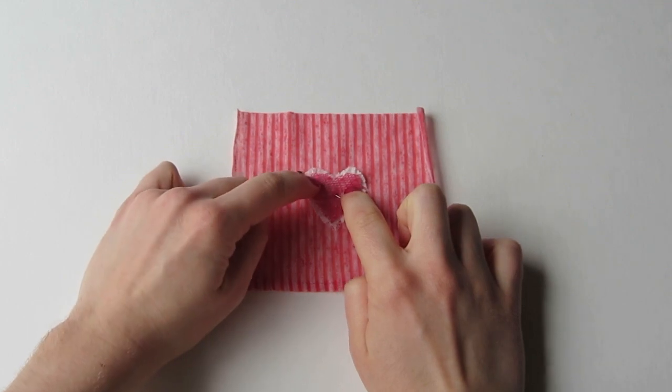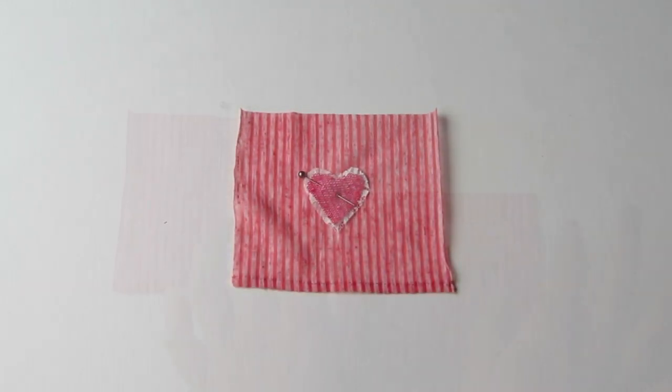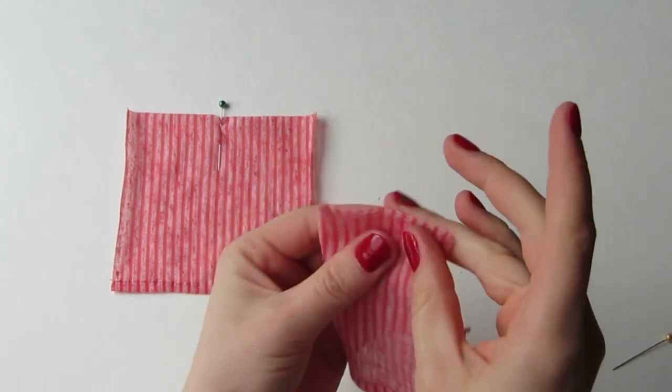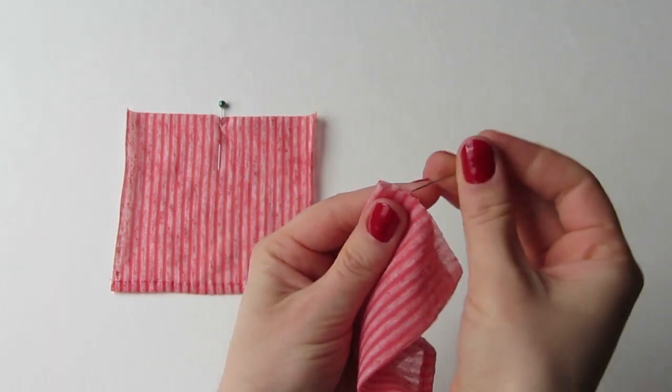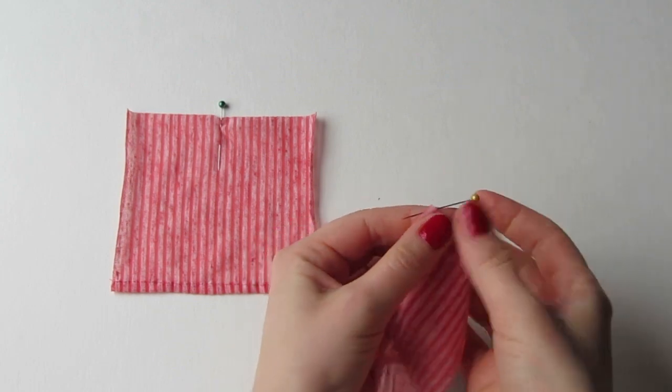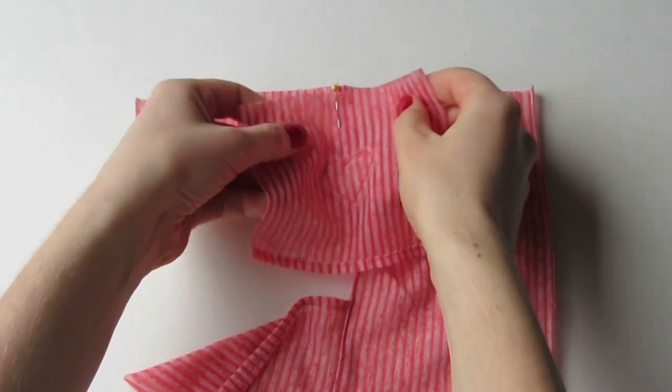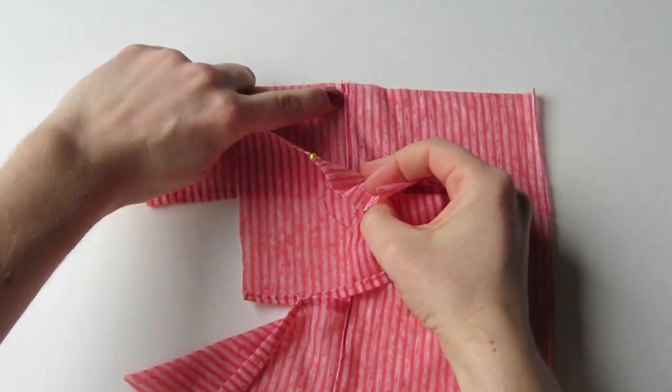Fold each sleeve in half and then mark the middle point with a pin. Lay the sleeves onto the sweater body again with right sides together, matching up the pin to the shoulder seam line.